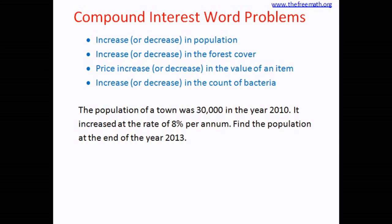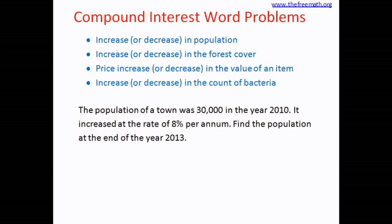Let's take an example. The population of a town was 30,000 in the year 2010. It increased at the rate of 8% per annum. Find the population at the end of the year 2013 — that means after 3 years. You can see that the increase in population happens every year, meaning every new year has a new population, and therefore the increase in population is in compounded form.